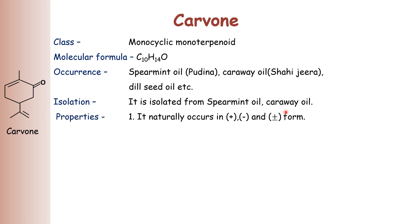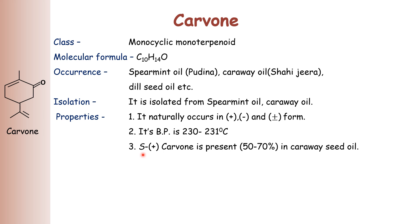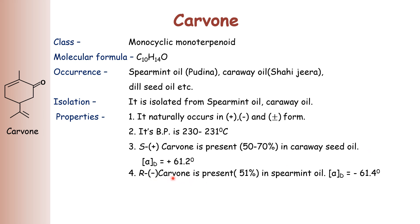Regarding isolation, carvone is isolated from spearmint oil, caraway oil, etc. It naturally occurs in dextro, levo, and racemic forms. Its boiling point is 231 to 232 degrees Celsius. Dextro-carvone is present about 50 to 70 percent in caraway seed oil, while levo-carvone is present at about 51 percent in spearmint oil.